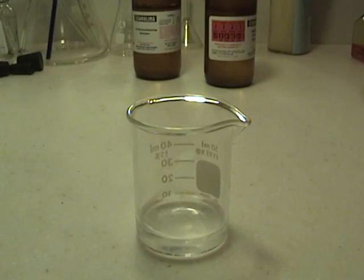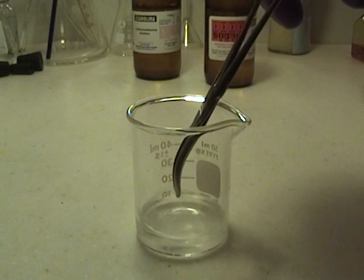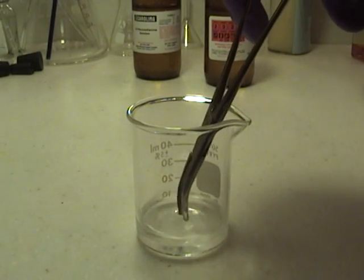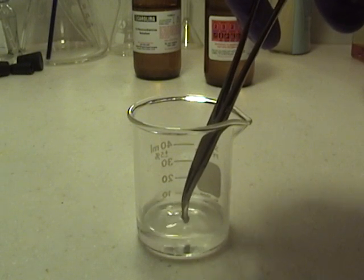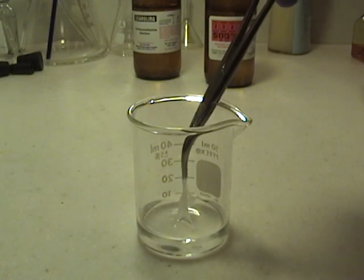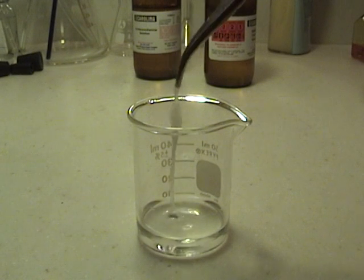Now we are going to attempt to take the nylon out and wrap it around a stir rod. So you want to take your tweezers or forceps and reach in and make sure you go down to where the two liquids meet. You are going to grab that layer there and pull that out.